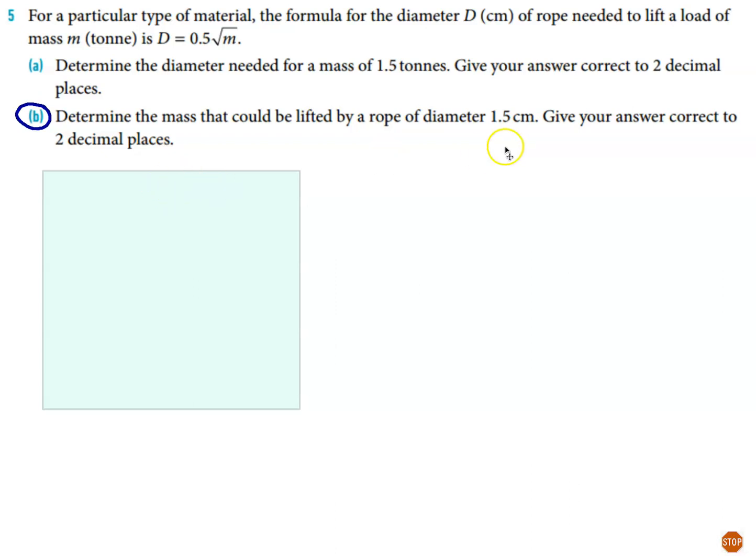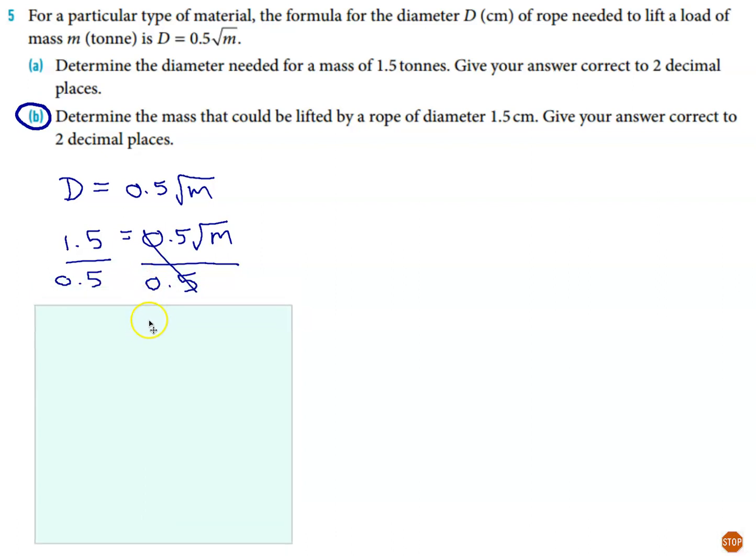Okay, so pretty straightforward. Obviously the 1.5 is going to go in place of D and not M. So that's the first stage. There's the first stage right there. D is equal to 1.5. Divide both sides by 0.5. 1.5 divided by 0.5 is 3.